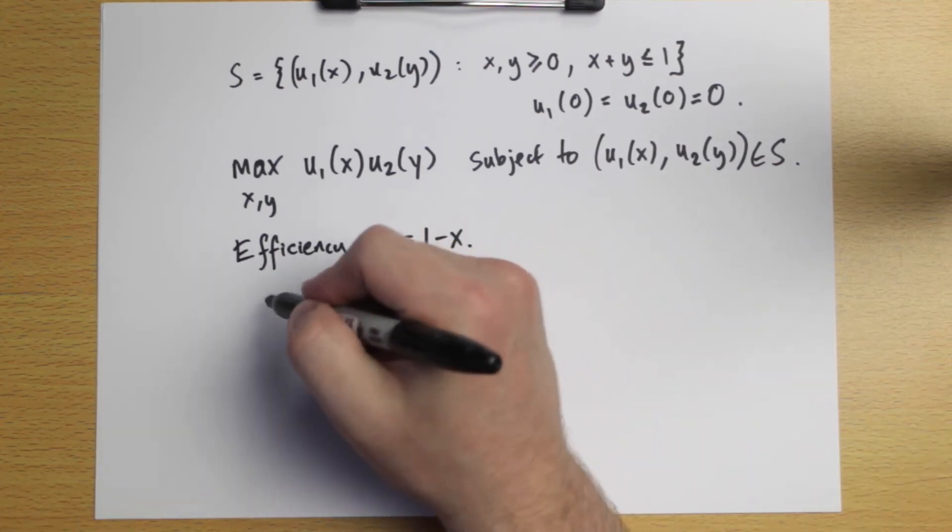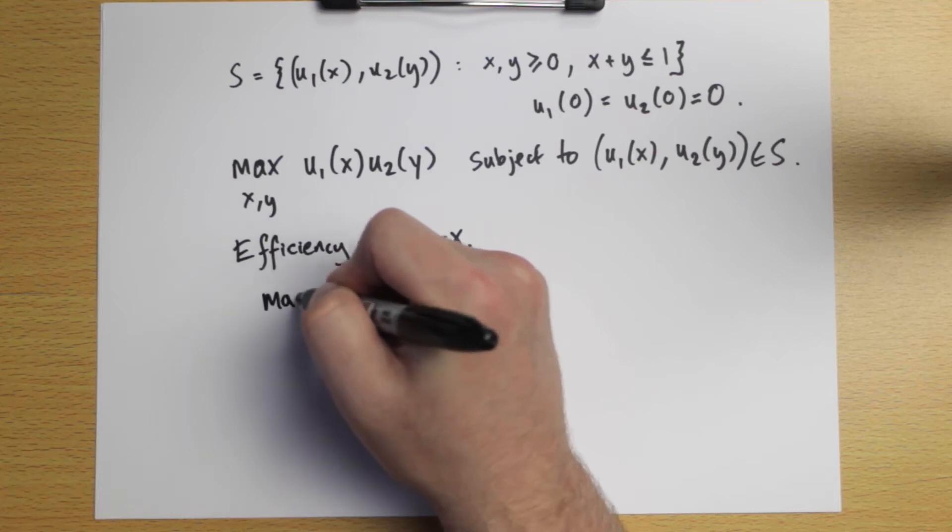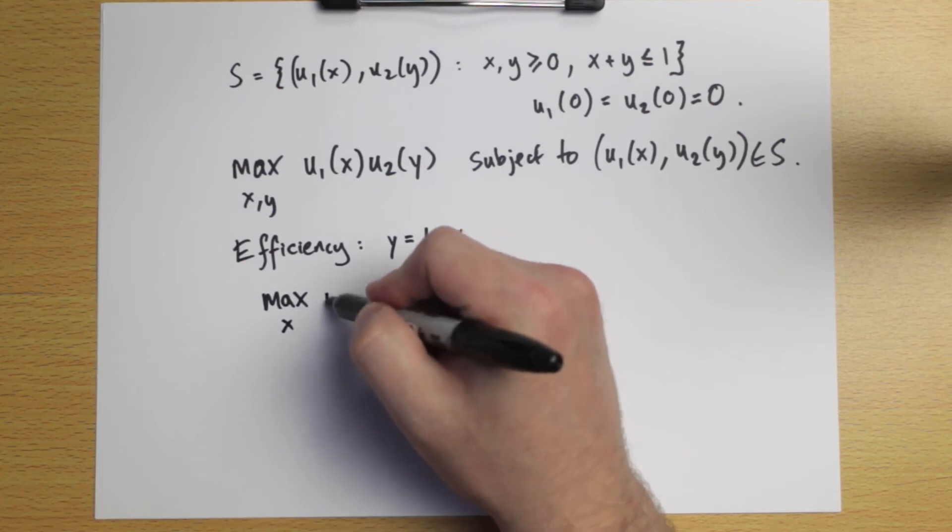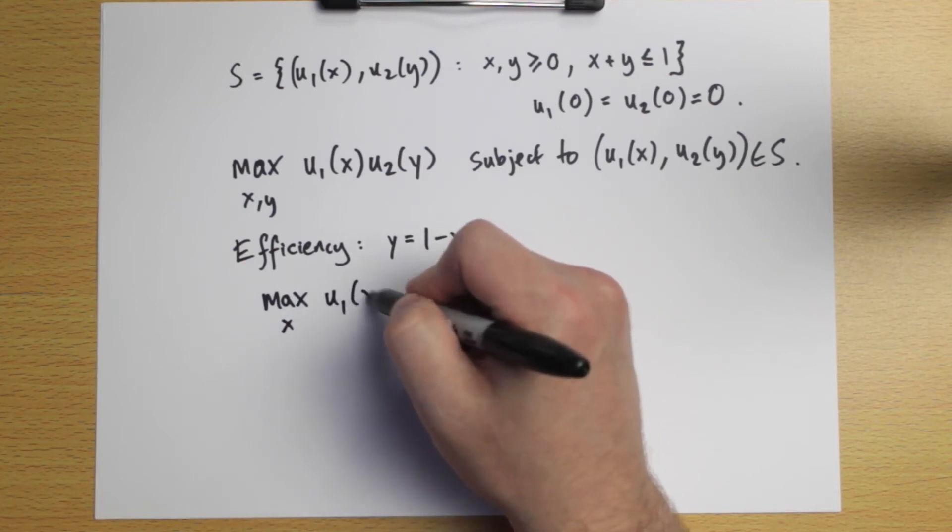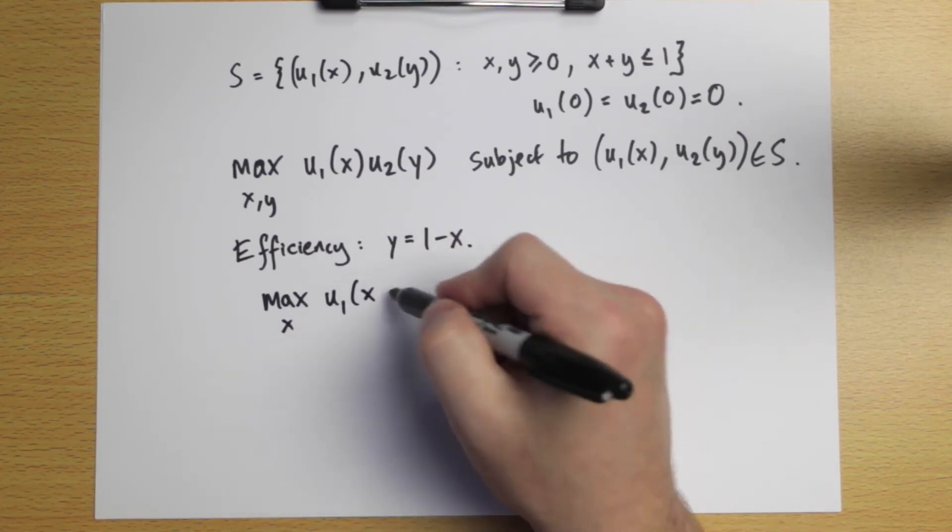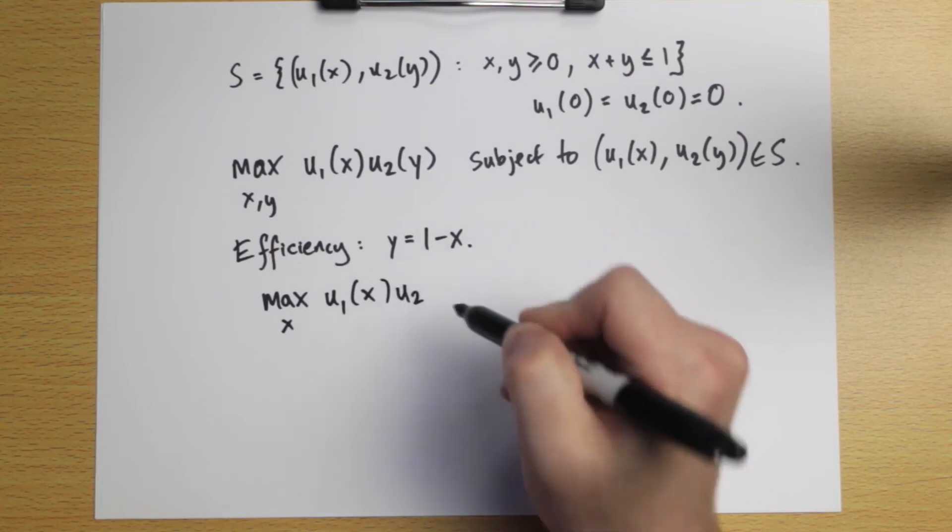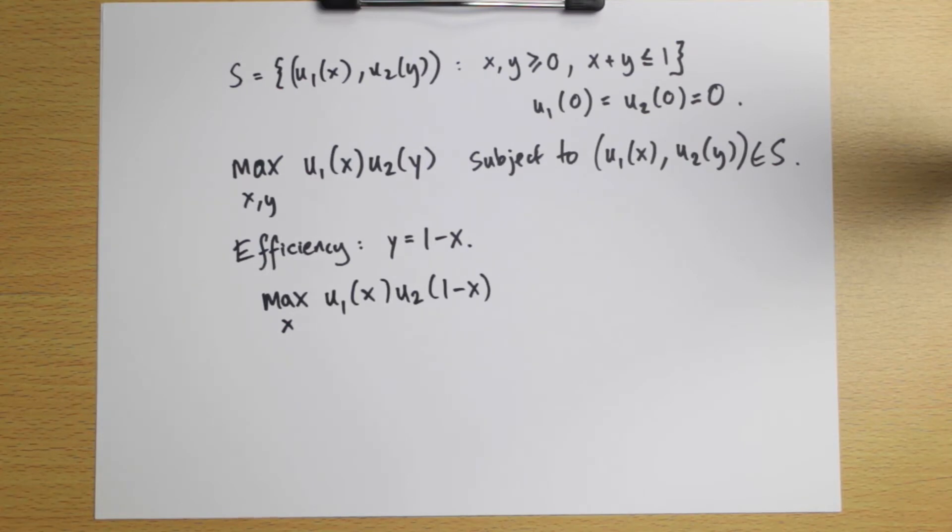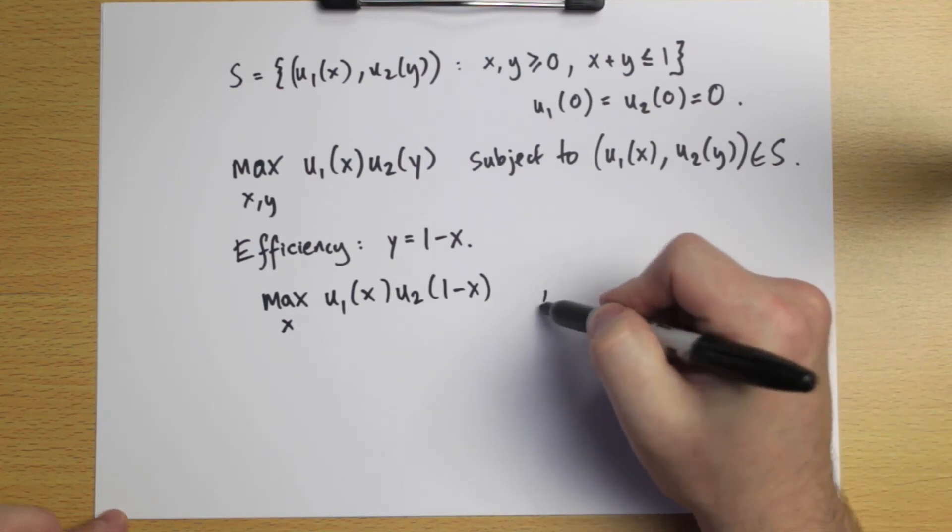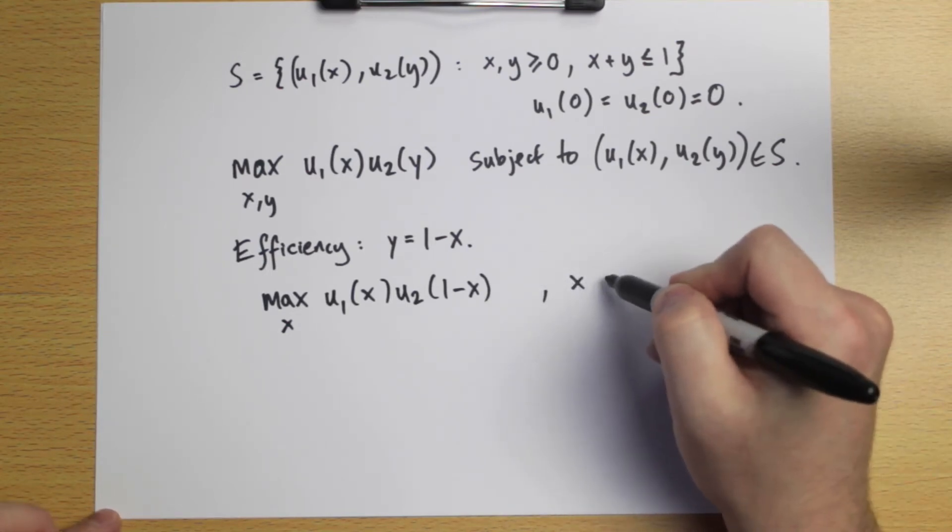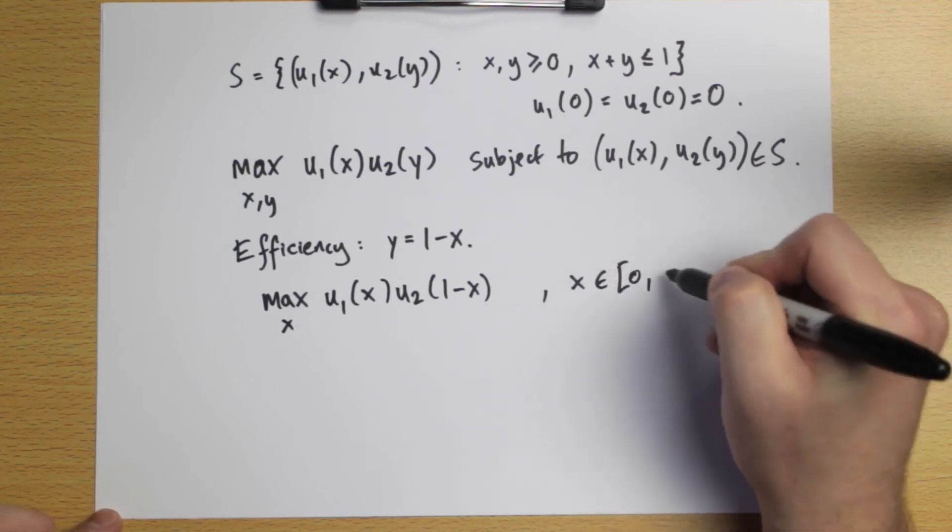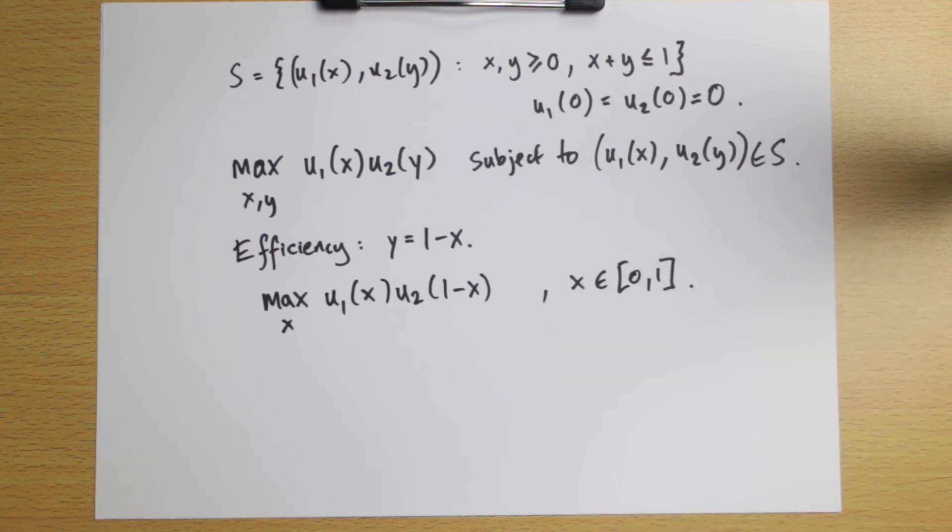You can see how this simplifies the problem. Now, rather than two dimensions, we're just choosing an X to maximize the Nash product, the utility for player one of X, multiplied by the utility for player two of one minus X. And the constraint is now simply that X belongs to the interval zero to one.